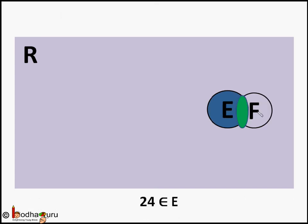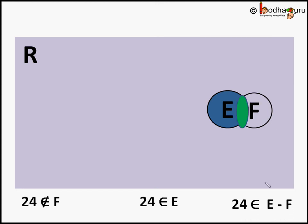Same way 24 where should it go? So 24 is an even number so it belongs to set E but it does not belong to set F because it is not a multiple of 5. So 24 belongs to set E but not in F. So it is there in E minus F.